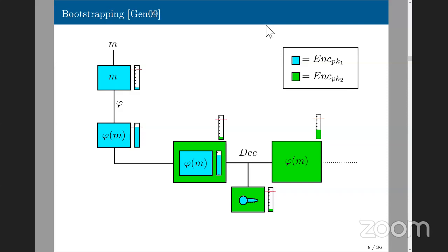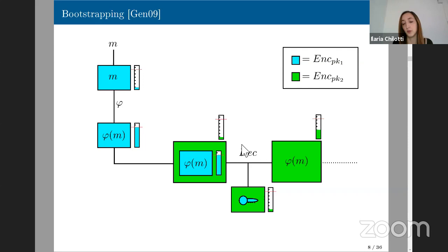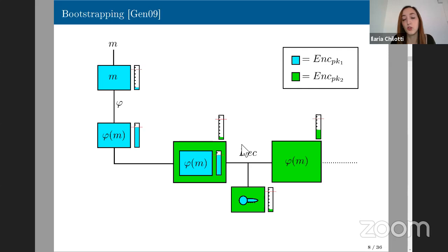A further point: the bootstrapping operation requires putting the blue box inside the green box, which does require a public key. Obtaining a public key encryption scheme from a secret key homomorphic encryption scheme is extremely easy — if you publish a list of ciphertexts encrypting zero, you effectively have a public key. So yes, this should technically be a public key encryption scheme at that step.